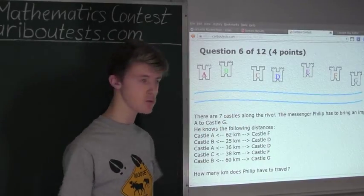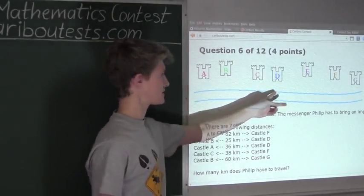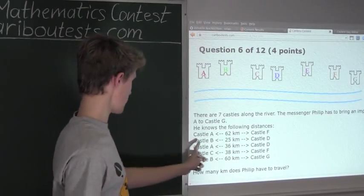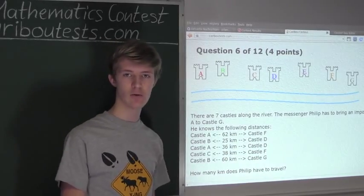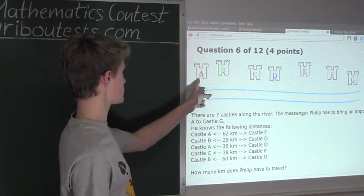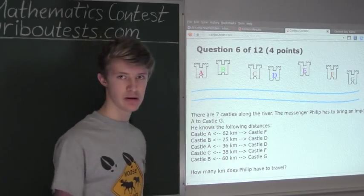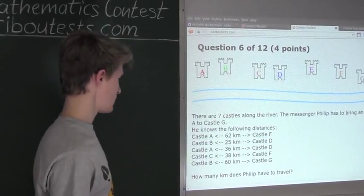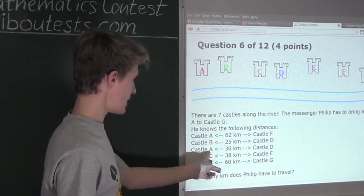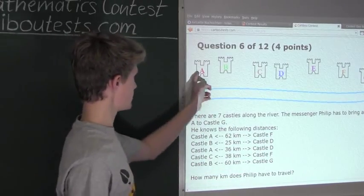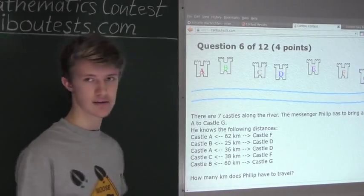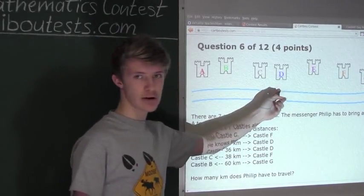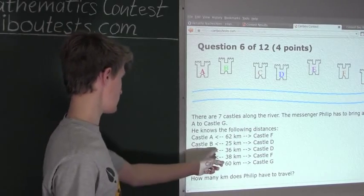...we need to now use a statement with Castle A and Castle D. And luckily here, we have a statement with Castle A going to Castle D, which is exactly what we need to find out the distance from Castle A to Castle B. Alright, now from Castle A to Castle D is 36. So we know that this is 36. And just as a refresher, we know that B to D is 25 from the other statement here.